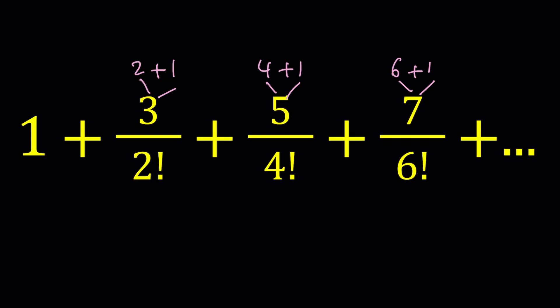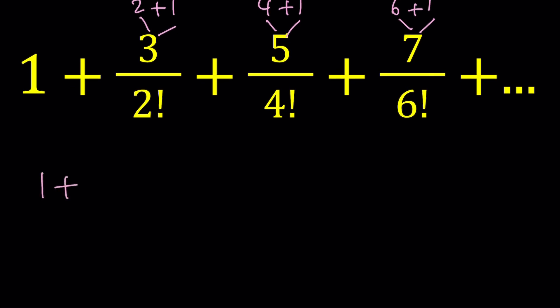So the numerators are odd numbers, the denominators are even factorials. That's how it works. Okay, so after doing this we can basically write this as follows: 1 plus 2 plus 1 over 2 factorial plus 4 plus 1 over 4 factorial plus 6 plus 1 over 6 factorial and so on and so forth.